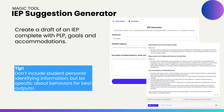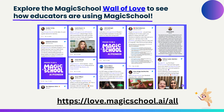Another great tool to explore is the IEP suggestion generator — you can create a draft of an IEP complete with goals and accommodations. If you'd like to learn more ways that teachers are using Magic School AI, check out the Magic School AI Wall of Love. The link is on the screen and will be in the description of this video.